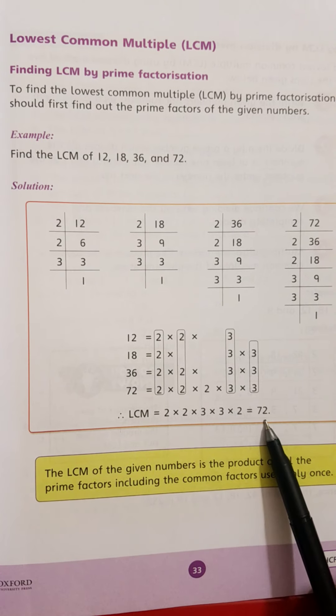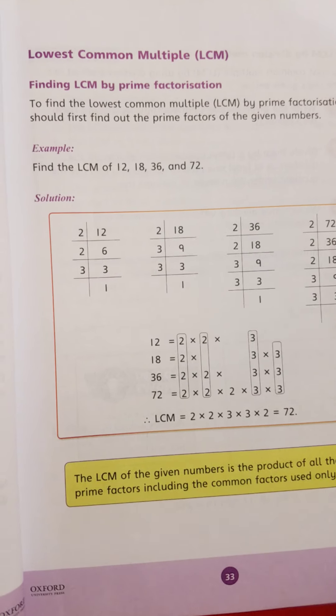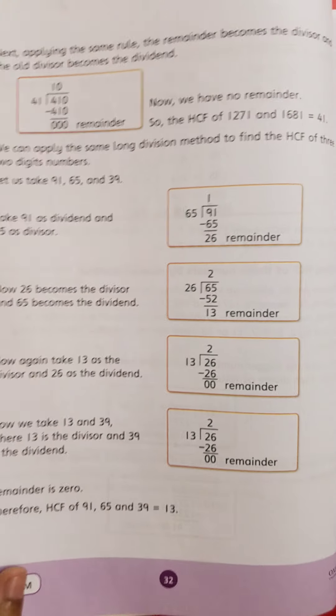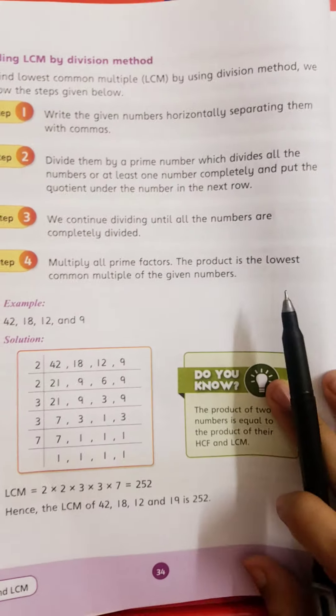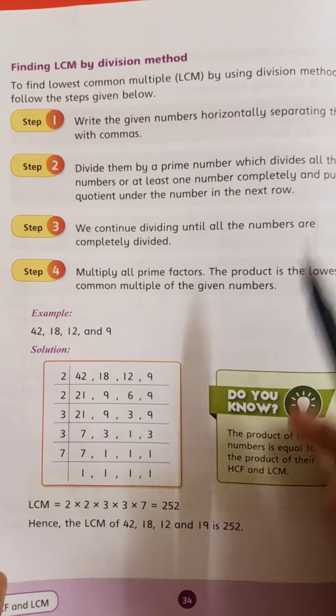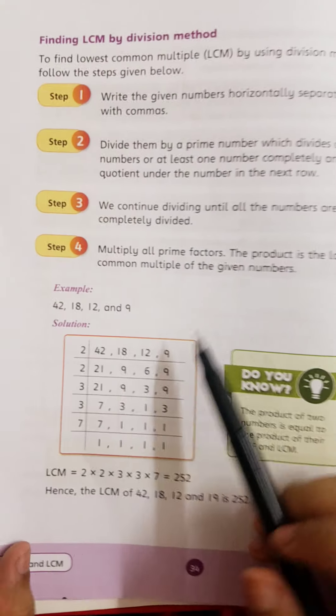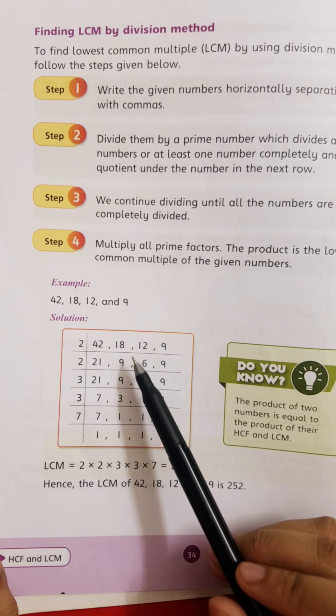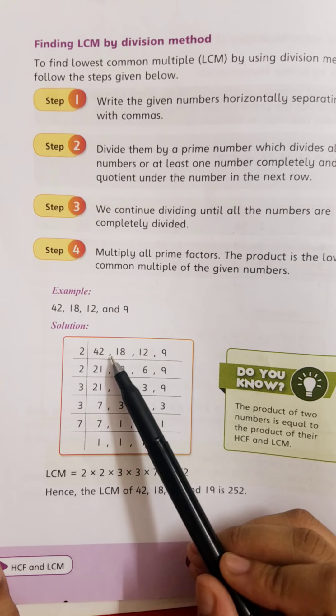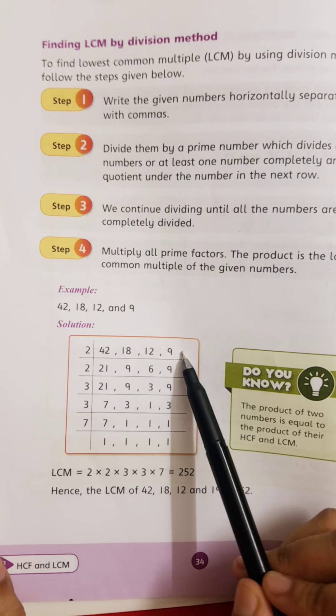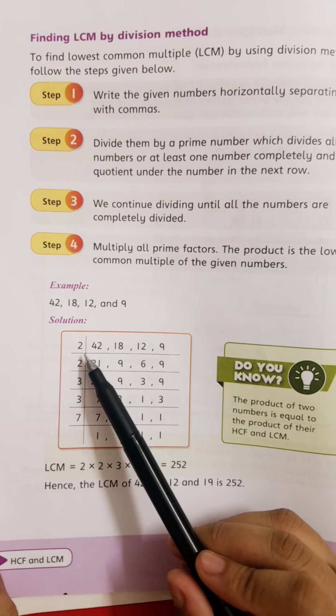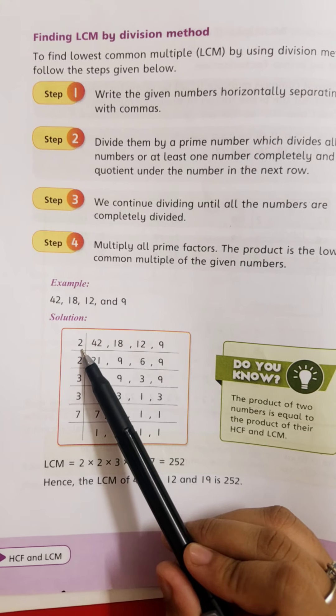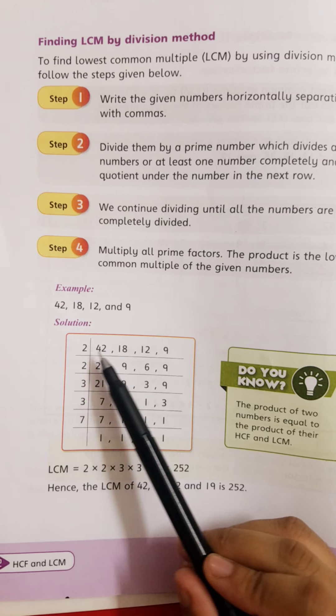This is the prime factorization method. Now we find LCM by division method. For example, we have four numbers. By division method, write the four numbers separately, then divide by the smallest common number like 2 from even numbers.